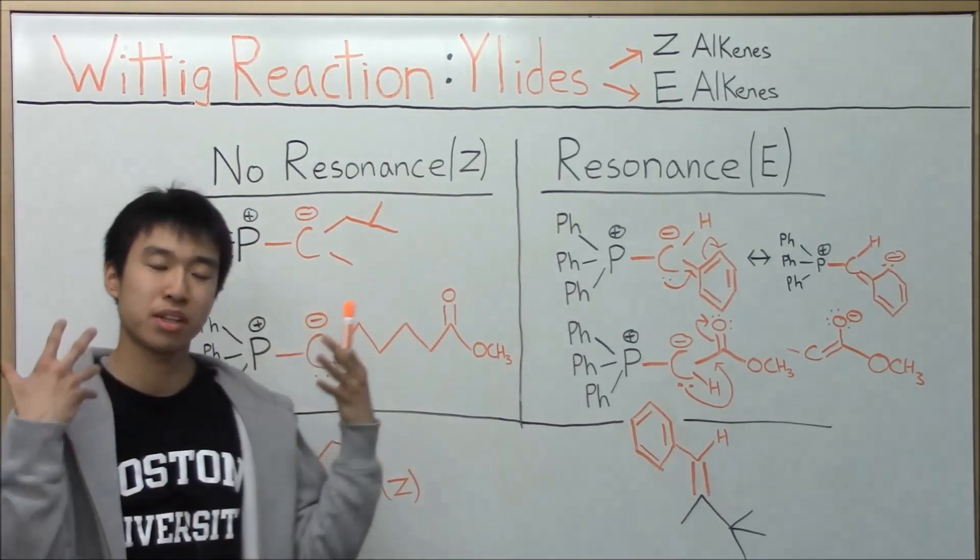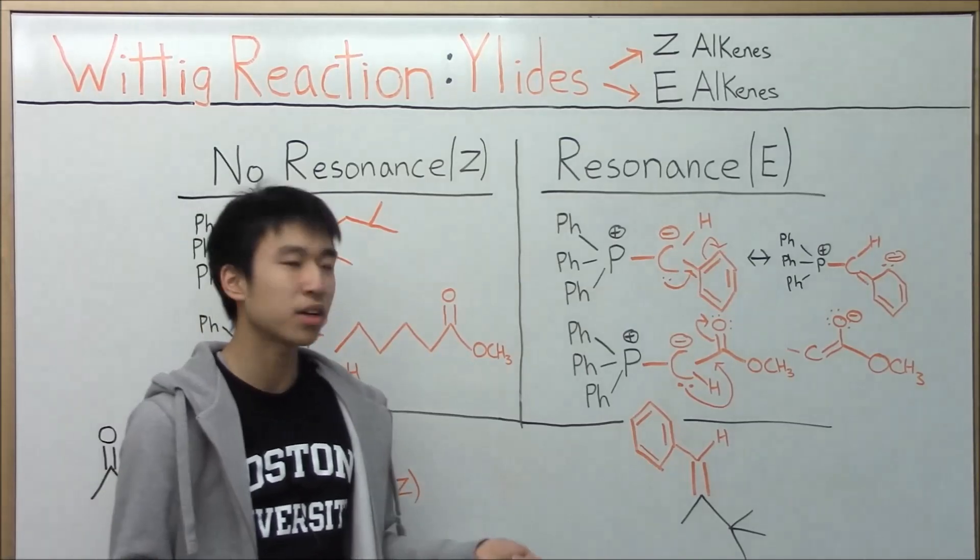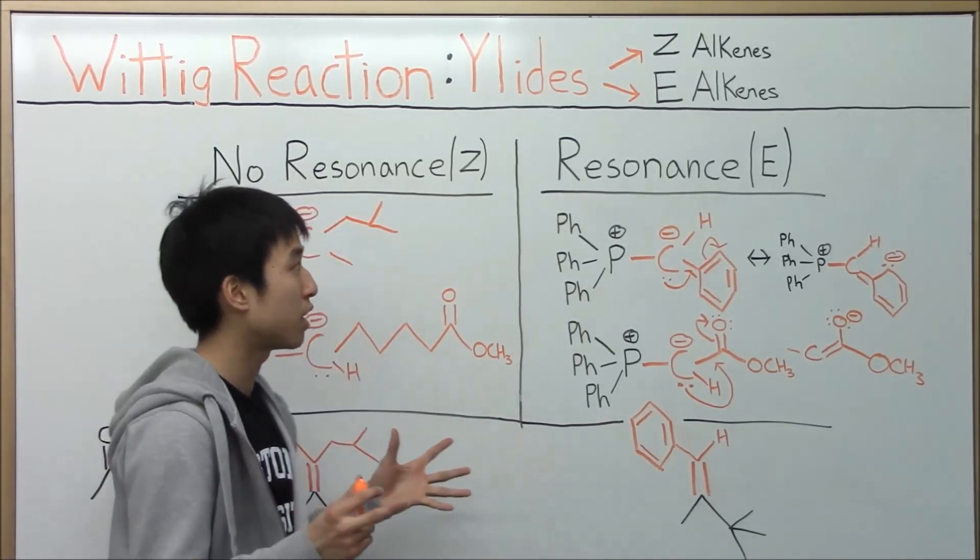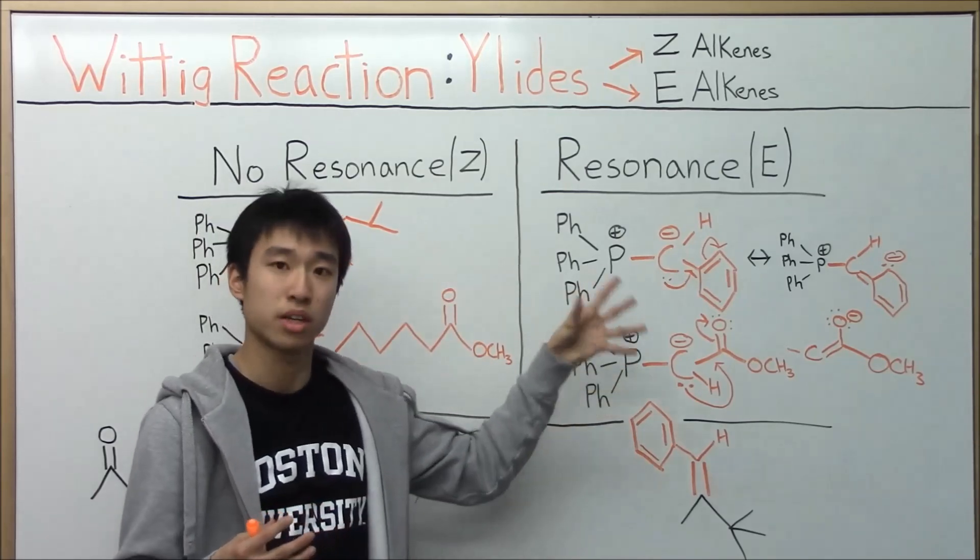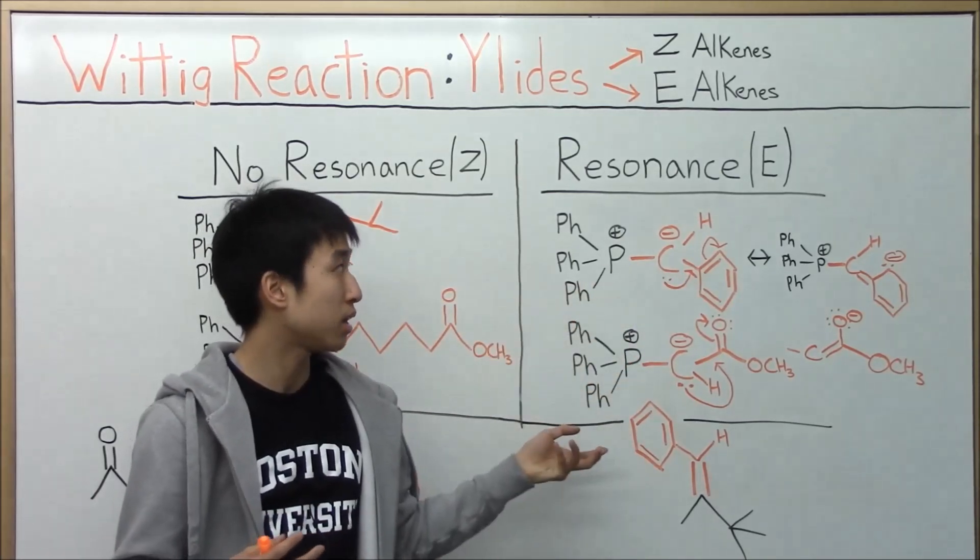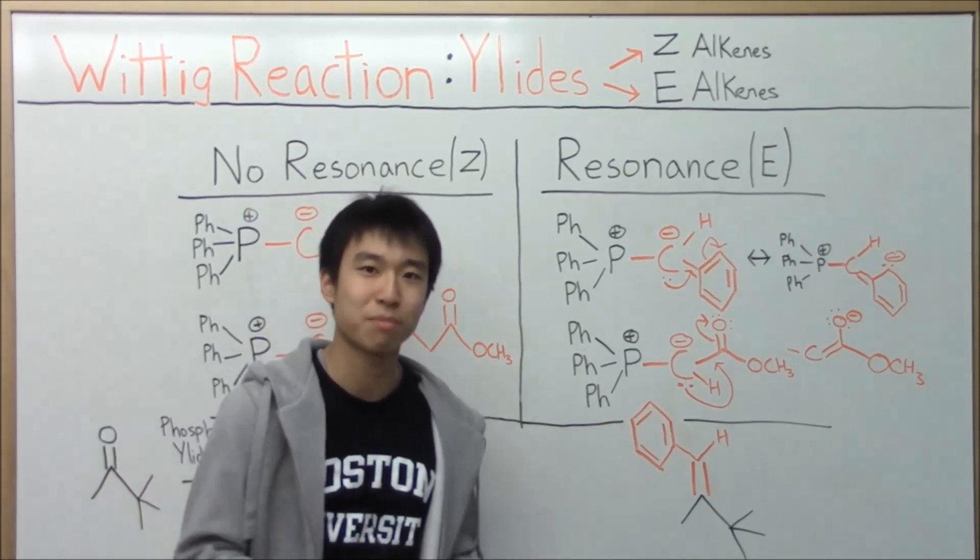So no resonance, typically less stable, so you get a less stable alkene, okay? I also haven't figured out exactly why if you have a resonating group on your ylid you get an E-alkene, but when I find out I'll be sure to tell you guys, okay? Hopefully that was a little bit helpful.